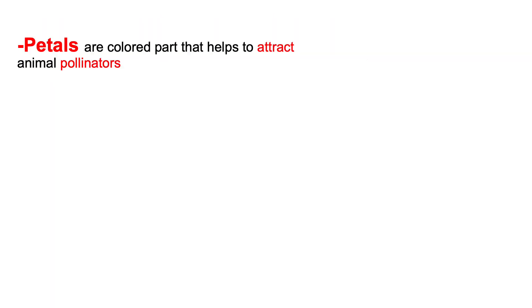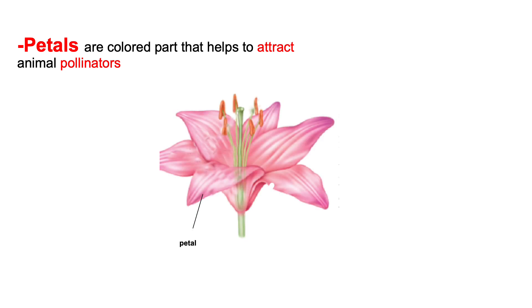The next part of the flower is the petals, which are different colors in different flowers. For example, in a red-colored rose, the petals are red. In a sunflower, they are yellow. In a hibiscus, they can be pink, orange, or white. Petals are the colored part. They are brightly colored to attract insects and animals, because these insects and animals are going to further help in pollination of the pollen grain.